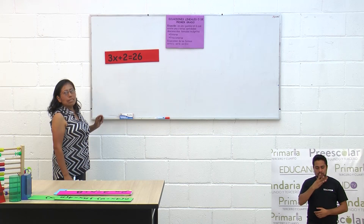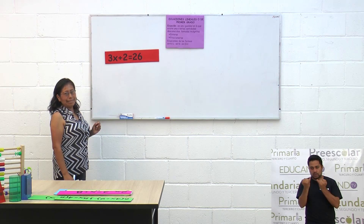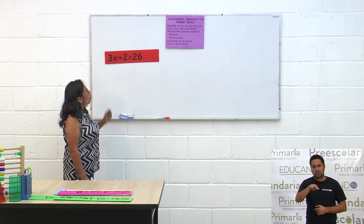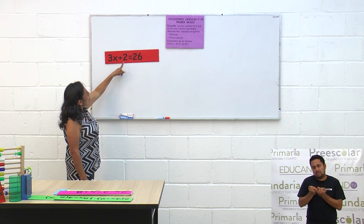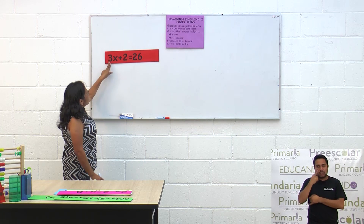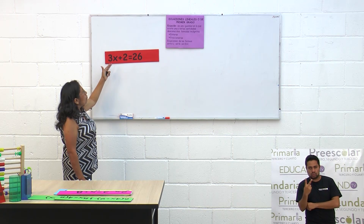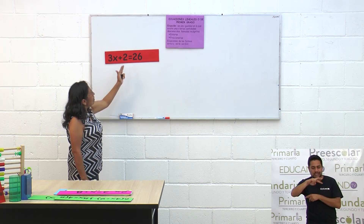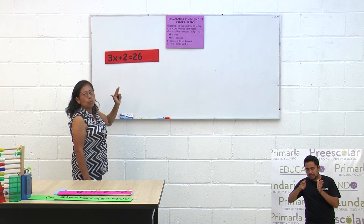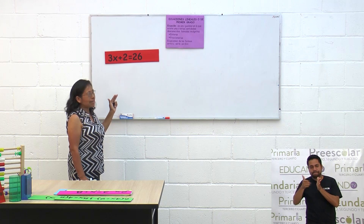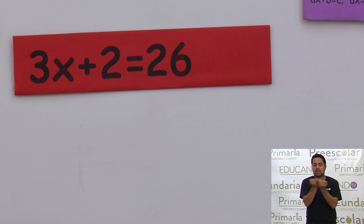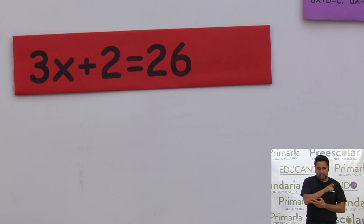Tenemos 3X más 2 igual a 26. Aquí tenemos una ecuación, es una igualdad. Si se dan cuenta, 3X más 2 es un miembro que está antes del signo igual, y el 26 es otro miembro que está después del signo igual. En medio de estos dos términos está el signo igual. Vamos a resolverlo: tenemos 3X más 2 igual con 26.